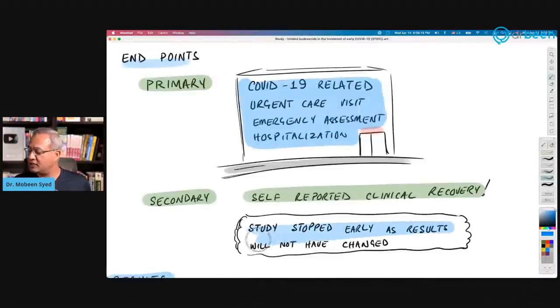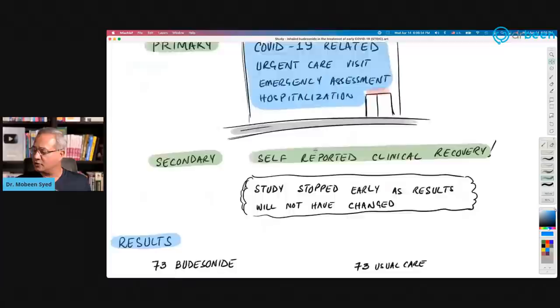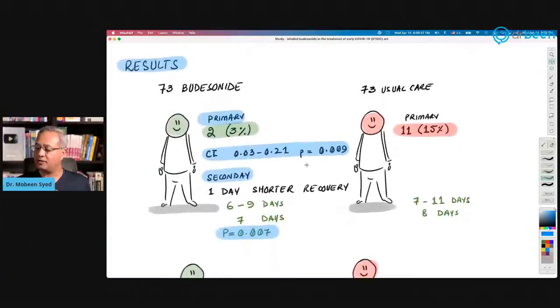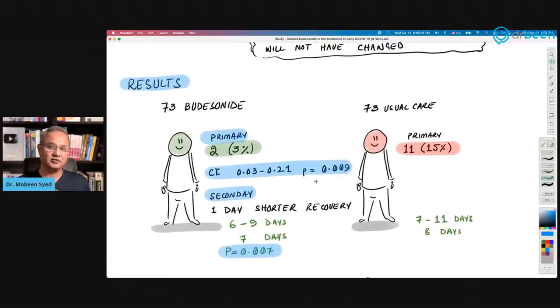Study was stopped early because an independent review committee, board, company, they had reviewed the data and said that further continuing with the study will not change the results. The results had become pretty stable. So it was not stopped because there was some harm. It was stopped because the results became consistent.